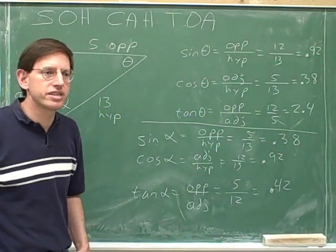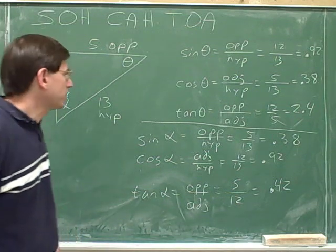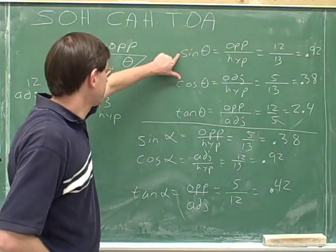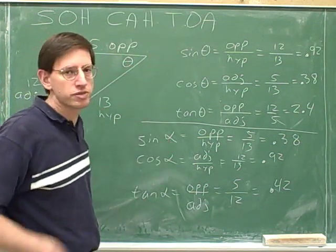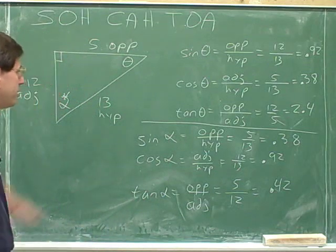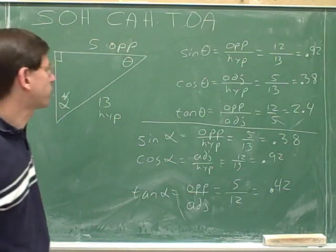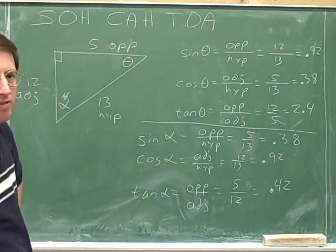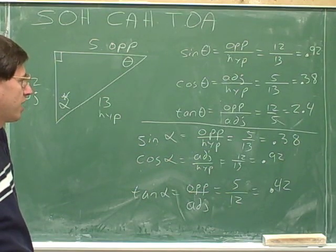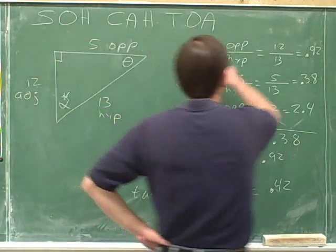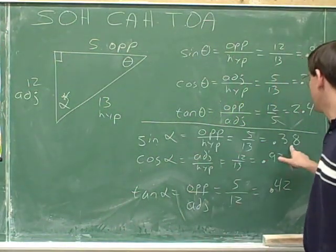This problem was designed to show you that it's crucial to know which angle you're focusing on. You can see there's a big difference between the sine of theta and the sine of alpha. The sine of theta was 0.92, but the sine of alpha was 0.38. So any time you're focusing on a right triangle, there are two different angles you could be focusing on, and therefore there are two different values you could get for the sine.